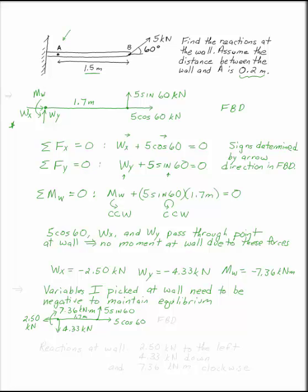And 7.36 kN meters clockwise to maintain equilibrium. So that would be my free body diagram after I have solved the equations of equilibrium. So you can at this point answer the question. Actions at the wall are 2.5 kN to the left, 4.33 kN down, and 7.36 kN meters clockwise. You've got three significant digits, units, and directions. No matter what variables you pick in your free body diagram, your answer at the end needs to be the same as everybody else's.